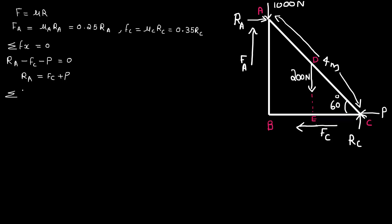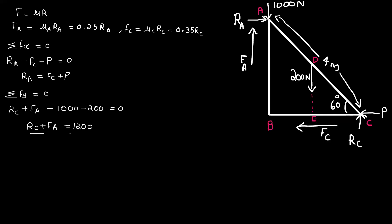Sum of Fy equals zero. In the y-direction, RC plus FA equals the total vertical load of 1,000 N plus 200 N. Therefore RC plus FA equals 1,200 N.